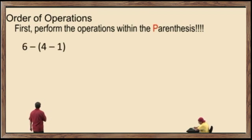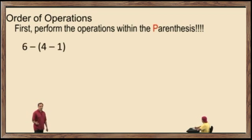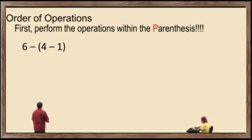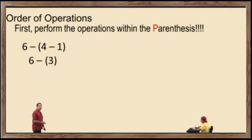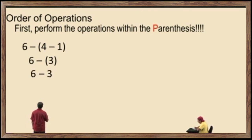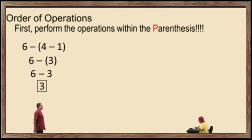Let's look at a problem: 6 subtract the quantity 4 subtract 1. Notice 4 subtract 1 is in the parentheses. 4 subtract 1 is 3, and we bring down our work. When you subtract a positive number, the parentheses are not required. So we write it as 6 subtract 3, which is 3, and that's your answer.